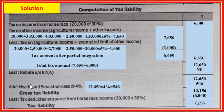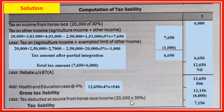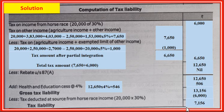Surcharge is not applicable. Health and education cess at 4 percent: 12,650 into 4 percent equals 506. Total gross tax liability: tax on income from horse race is 6,000, tax on other income - balance tax payable is 7,156. So total balance tax liability is 7,156 as the final tax payable.